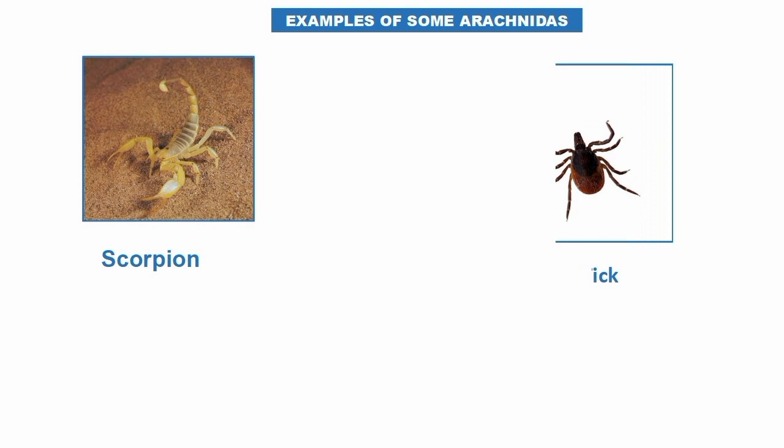As you can see here, there is a scorpion, there is a mite, and a tick. These are the main three examples of Arachnida that I mentioned.